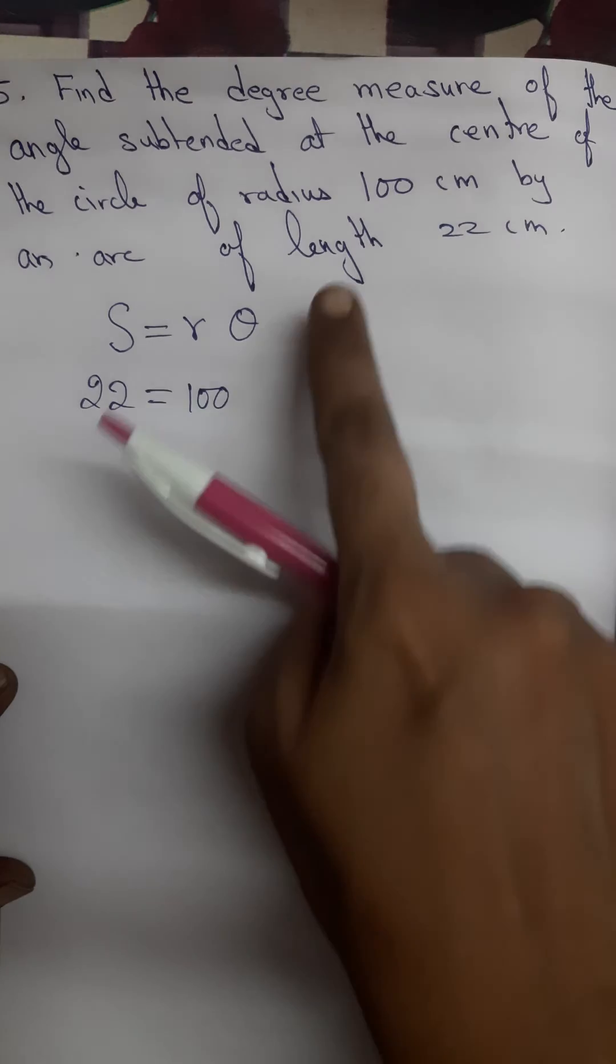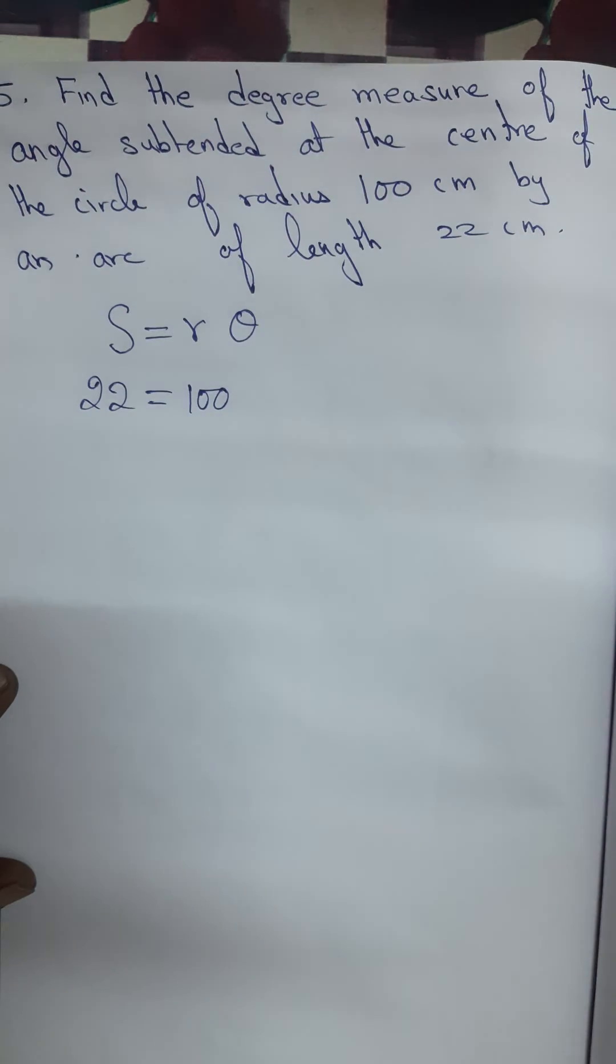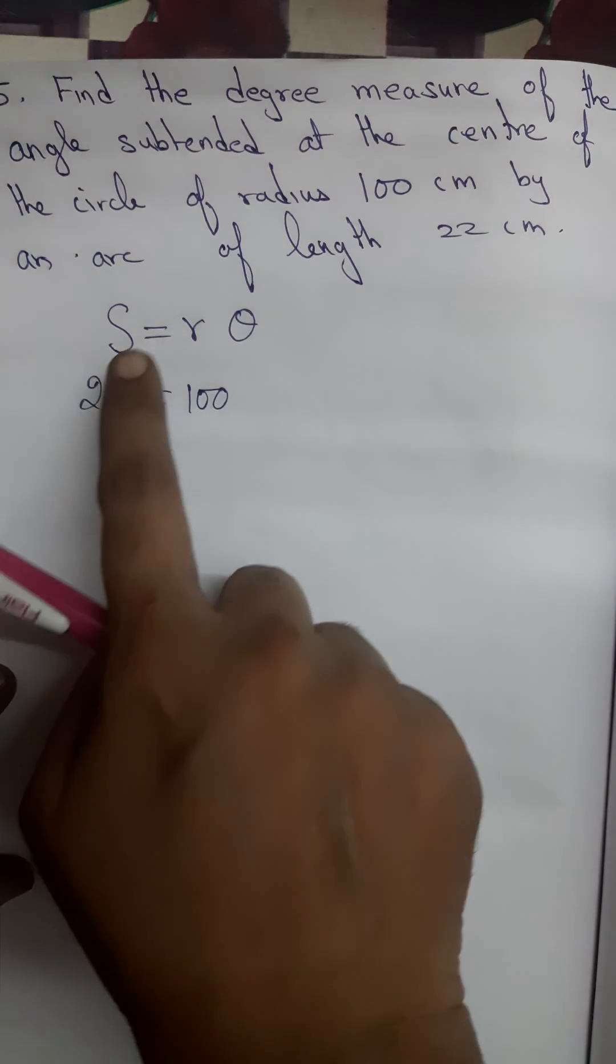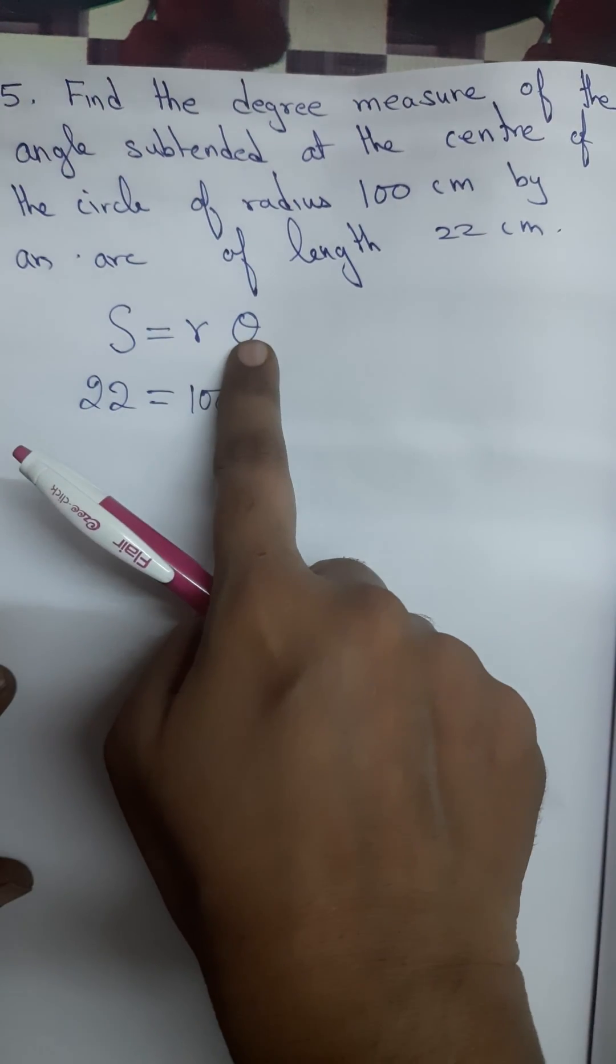In this question they have given you the arc length, they have given you the radius, they are asking you to find out the angle in degree measure. We are writing the formula s is equal to r theta.